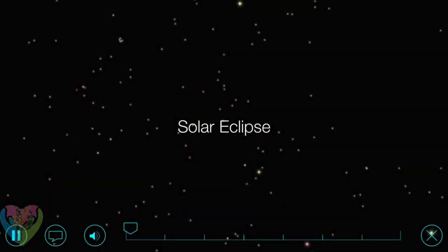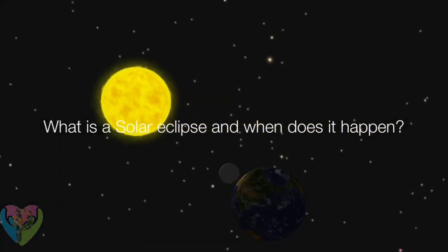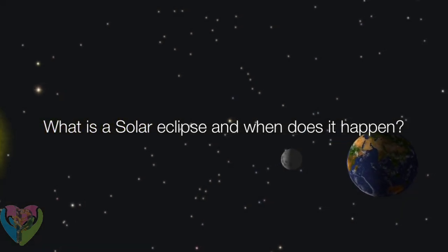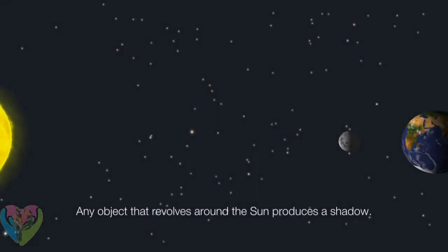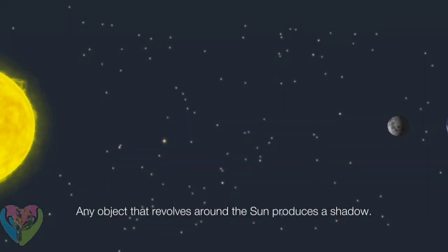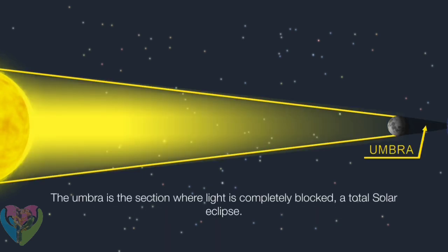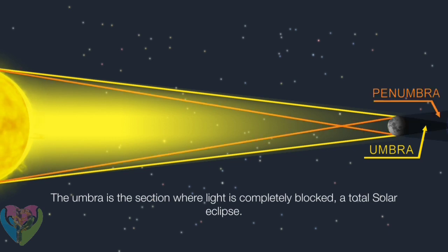Solar Eclipse. What is a solar eclipse and when does it happen? Any object that revolves around the sun produces a shadow. A shadow is divided into the umbra and penumbra. The umbra is the section where light is completely blocked — a total solar eclipse.